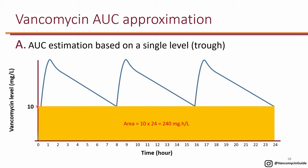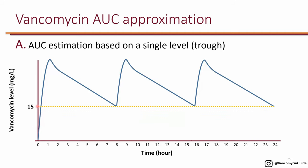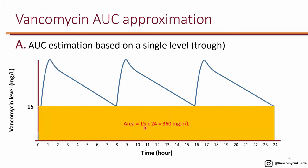That's where the recommendation of a goal trough of 10 to 15 comes from. For a non-serious infection, if you have a trough of 15, then 15 times 24 gives you 360. That's close to 400, and of course there's still area at the very top. So a trough of 15 will very likely achieve an AUC of 400. The old guidelines recommend a trough of 10 to 15 for non-serious infections, saying that achieving this probably gives you an AUC of at least 400.